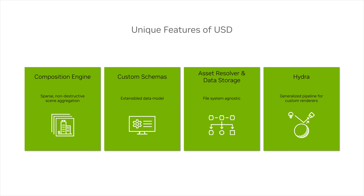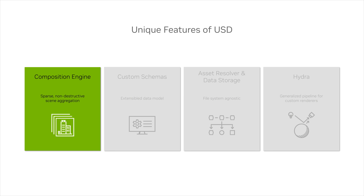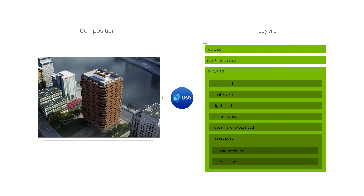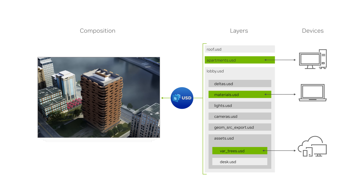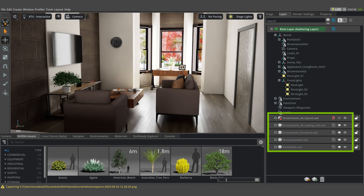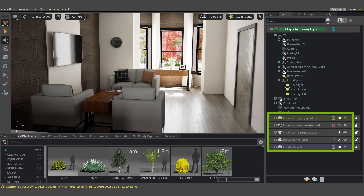There are four key features of USD that make it a powerhouse for data modeling and interchange, enabling it to be highly extensible and meet the demands of virtual worlds. The first is its composition engine, which enables sparse, non-destructive assembly of data from numerous sources as individual layers. Different users can modify the composed scene in different layers, and their edits will be non-destructive. The stronger layer will win out in the composition, but the data from the weaker layer remains accessible.